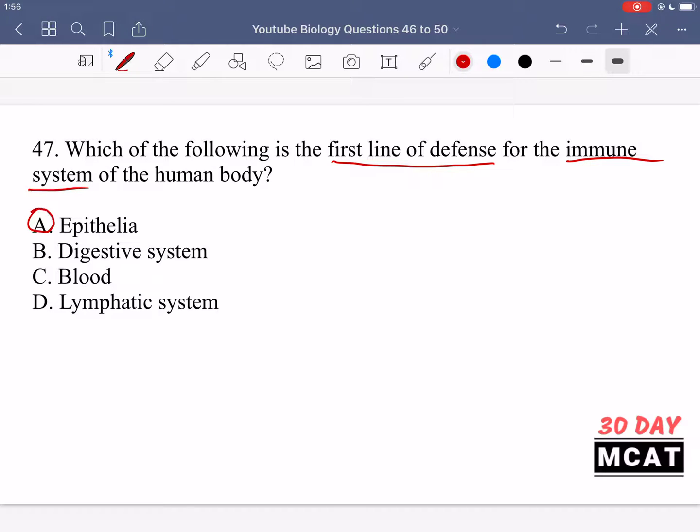And option A is correct. That would be the epithelia. So there are different types of epithelial tissue and epithelial linings that pathogens will first encounter. For example, the skin would be the first line of defense against any invasion of our body. So the first line of defense that the immune system has would be the skin, which is a type of epithelial tissue. And then there's also epithelial linings in our respiratory tract, in our digestive tract.